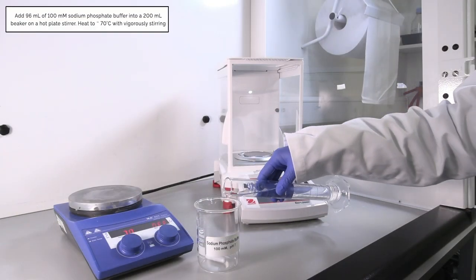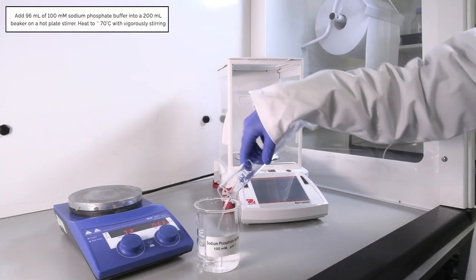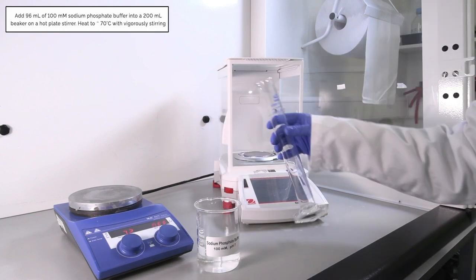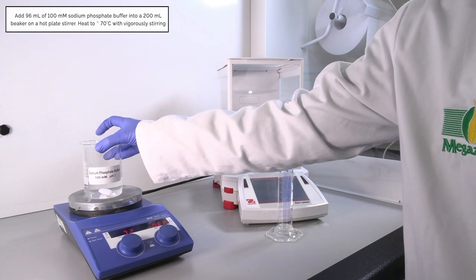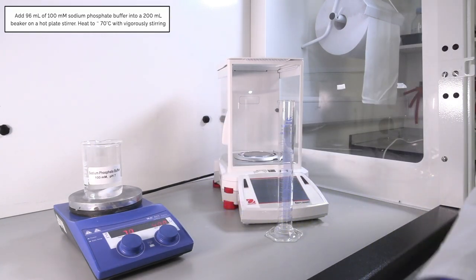Add 96 milliliters of 100 millimolar sodium phosphate buffer into a 200 milliliter beaker on a hot plate stirrer. Heat to approximately 70 degrees Celsius with vigorous stirring.